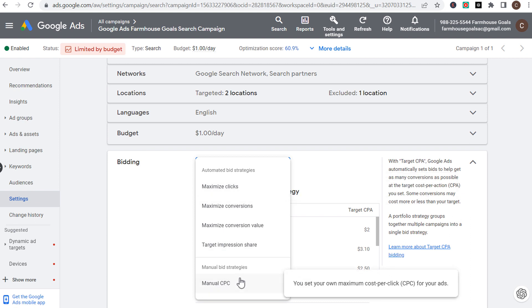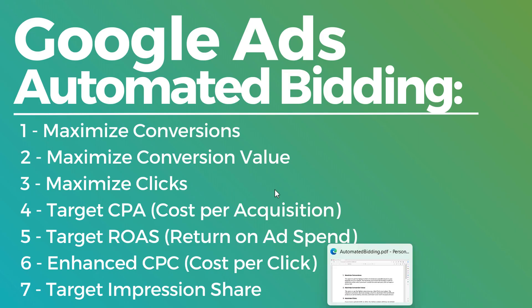The seven different automated bid strategies are: maximize conversions, maximize conversion value, maximize clicks, target CPA (cost per acquisition), target ROAS (target return on ad spend), enhanced CPC — which essentially combines manual bid strategies with an automated bid strategy — and target impression share.